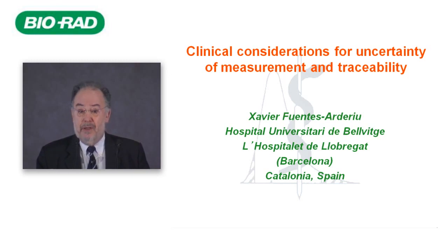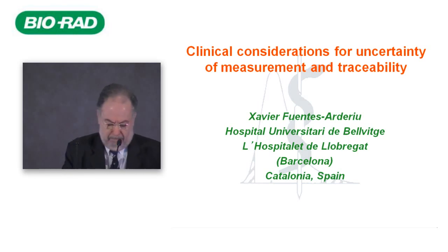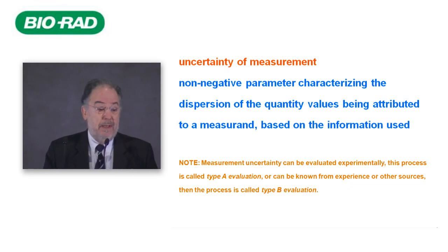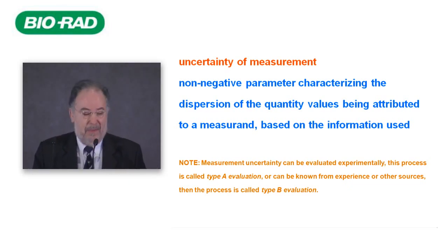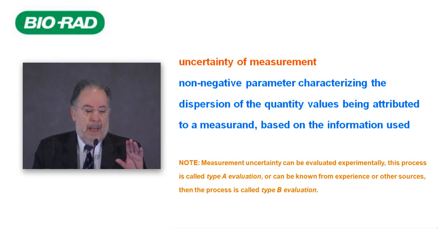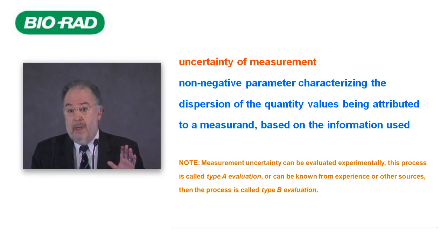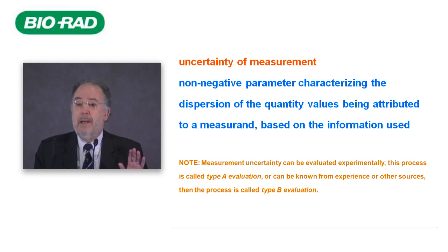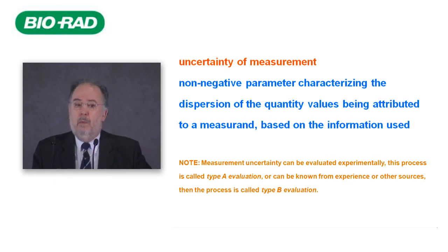The first concept is measurement uncertainty, or uncertainty of measurement. This is a statistical definition. The important thing is that uncertainty is, in most cases, a standard deviation — this is a very basic concept. As a standard deviation, we can estimate it by an experimental procedure; this is the Type A evaluation of uncertainty.